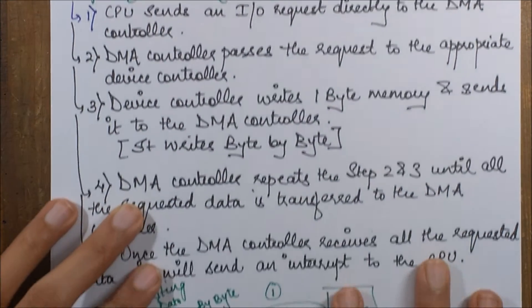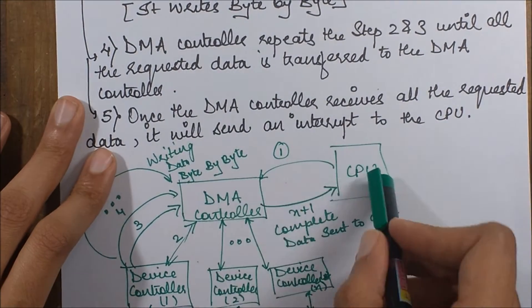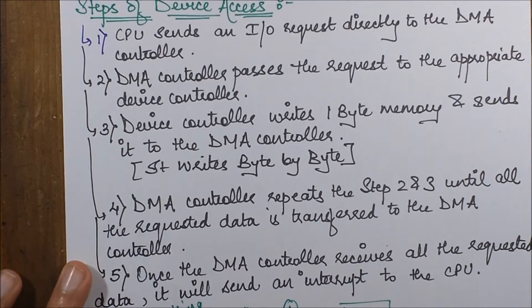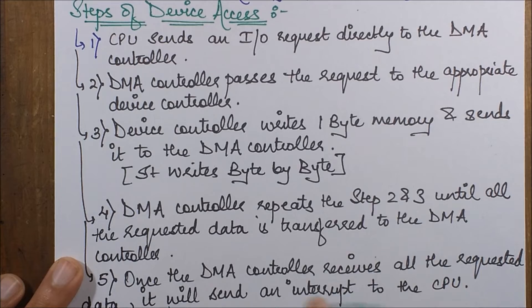CPU sends an I/O request. We are also going to refer to the diagram step by step. So this is the first step: CPU has sent a request to the DMA controller.